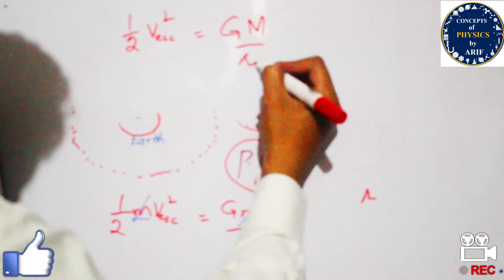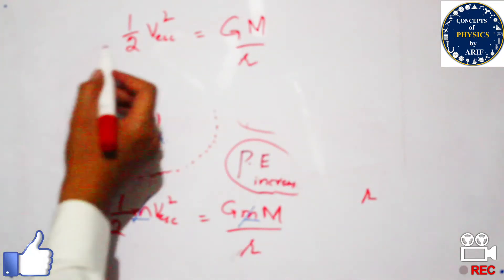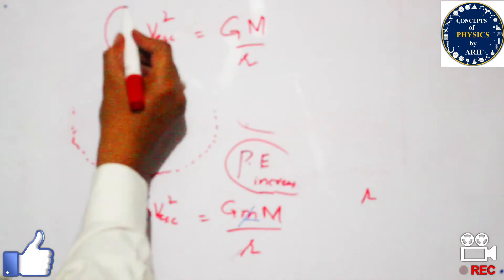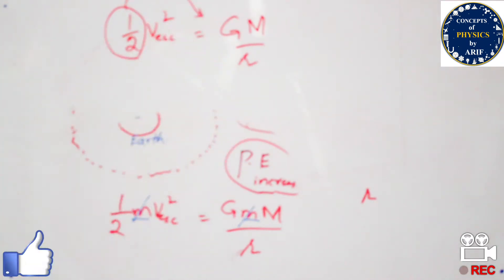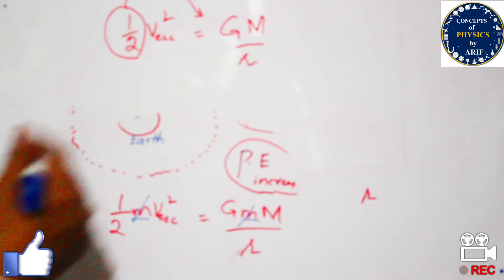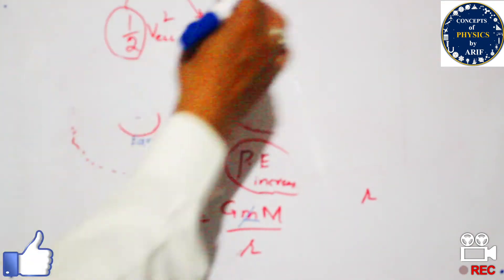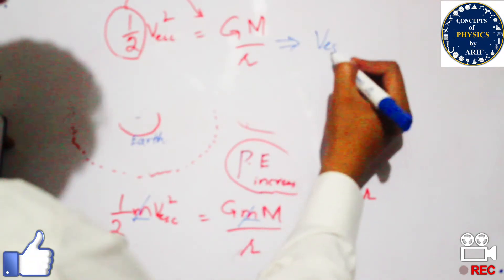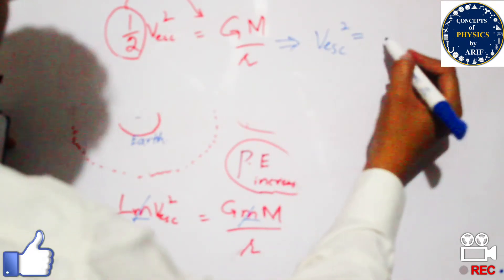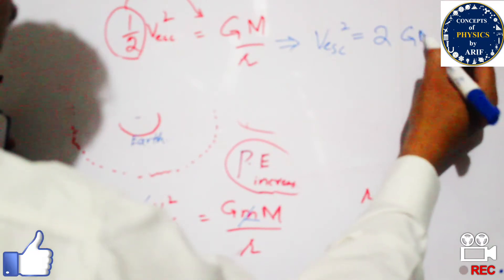Rearranging, the two on the left side moves to the right side and multiplies. So v_escape² = 2GM/r.